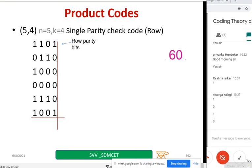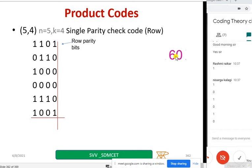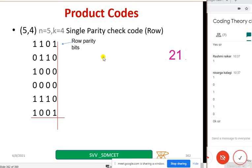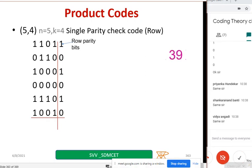Niserga has typed almost correctly: 1, 0, 1, 0, 1 — very good! I'm sure all of you completed it within a few seconds. The parity bits are 1, 0, 1, 0, 1, 0. Niserga's answer is correct and it matches my writing. Others have also gotten the same answer. This is the (5, 4) code — n is 5, k is 4, and there is only one parity bit.